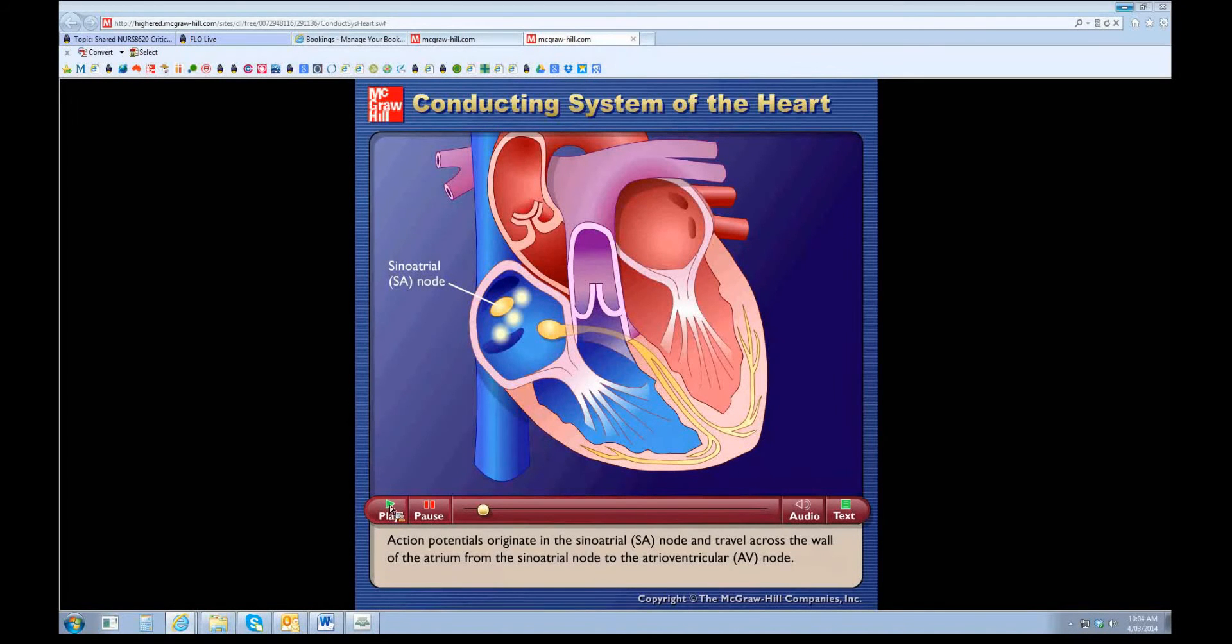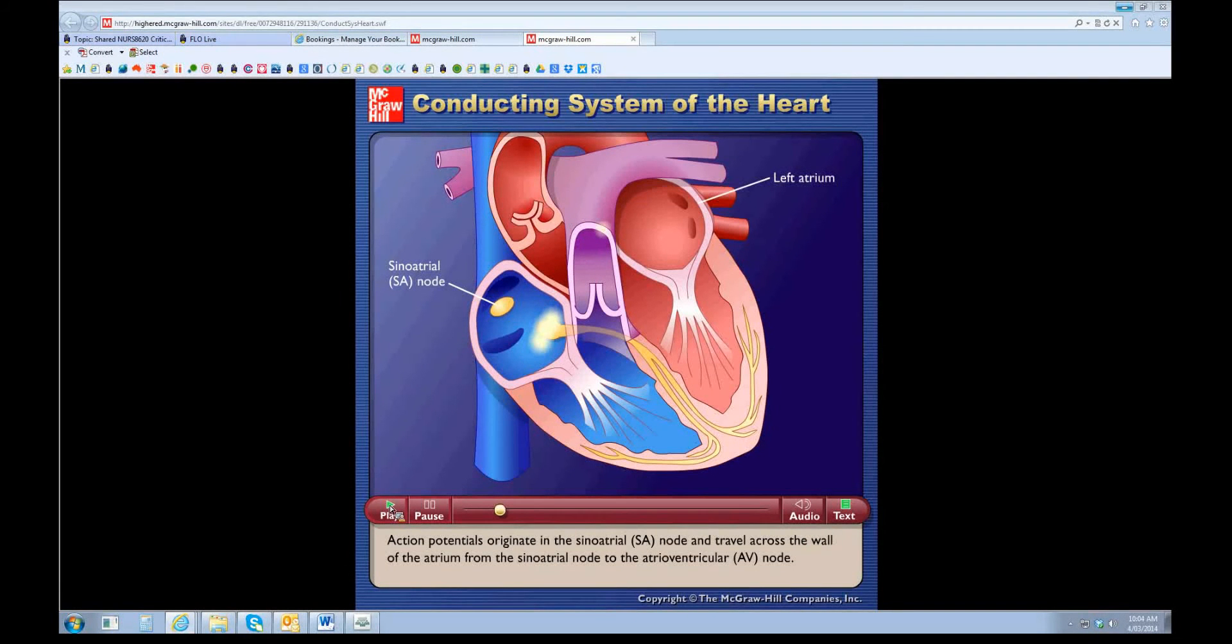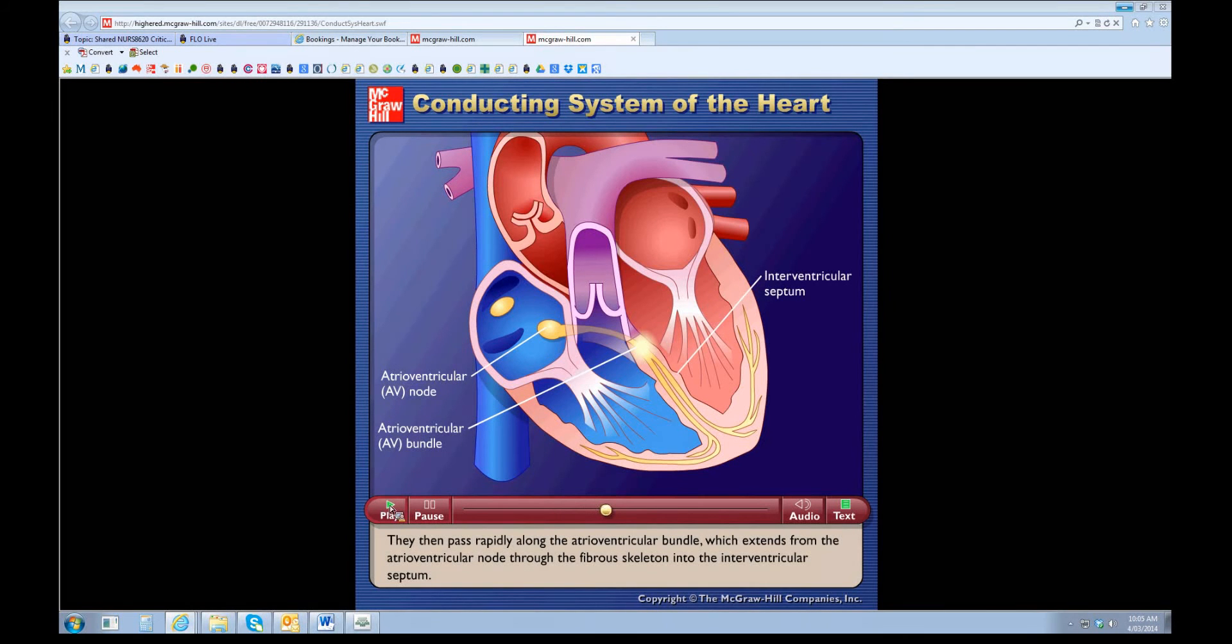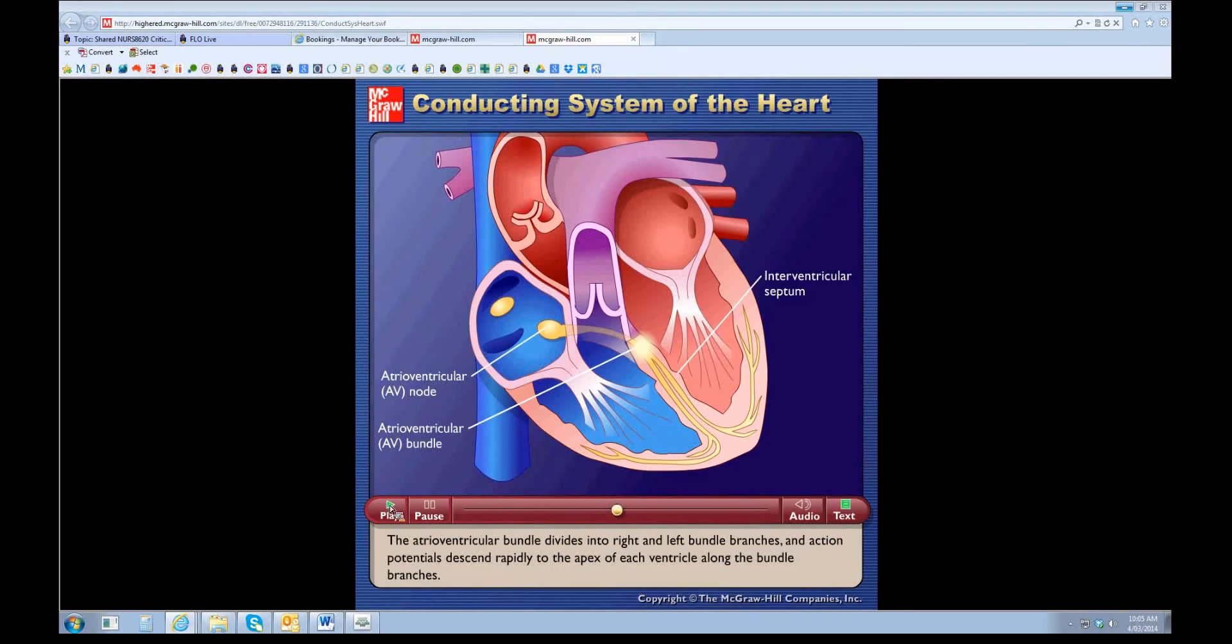When we get to the AV node, that actually slows down a bit. The reason for that is so the atrium can contract and empty blood into the ventricle. If it went through very quickly, you wouldn't get this lovely coordinated contraction.